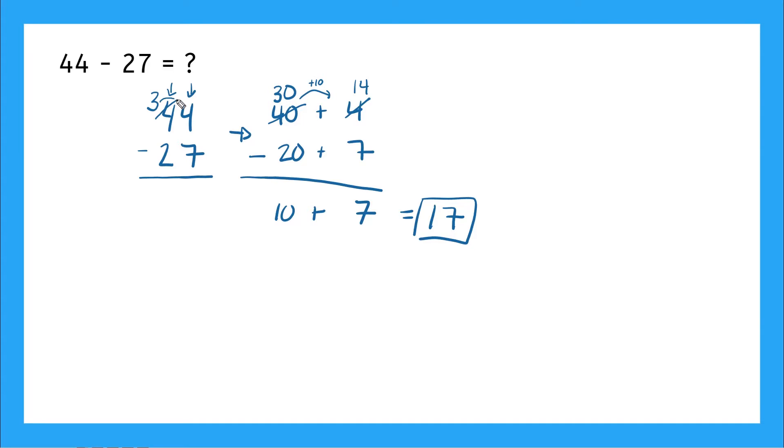And then I'm adding that 10 here to my ones column. So this 4 becomes 14. So now I have 14 minus 7. That gives me 7. And then here I have 3 minus 2, and that gives me 1. So I get 17 again, which I should get. I should have matching numbers. Good work.